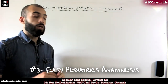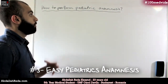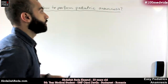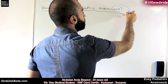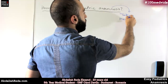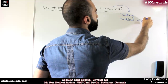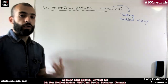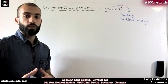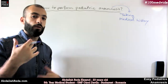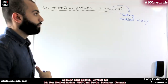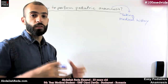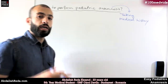Hey everyone and welcome back. Today we will be talking about how to perform pediatric anamnesis, or how to take medical history. Anamnesis means taking medical history from a child. Basically, anamnesis is when you engage with the patient and start to ask questions regarding the patient's history, cause of admission, the treatment the patient is going on, whether it's the first time they're feeling the pain or complaint, and so on and so forth.